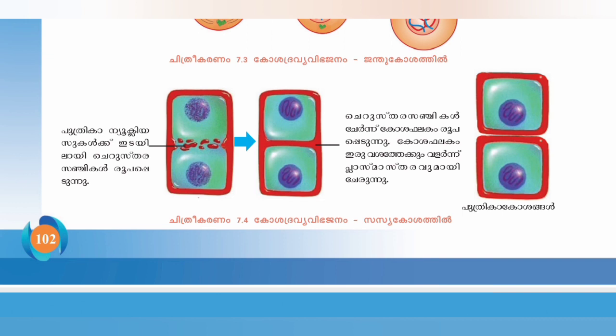For animals, the cell has to be separated from 2 places. Once the animal cells are separated, we split into different daughter cells. In plants, small vesicles form a cell plate. The cell plates are joined and the plasma membrane is formed from the cell plate.